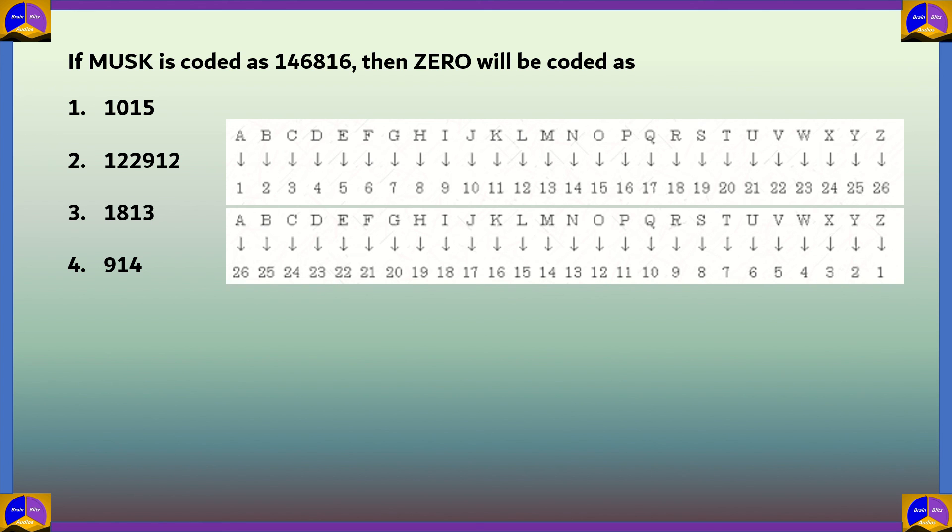If we look at the position of the alphabets in reverse, so Z will be 1 and A would be 26, we get M is 14, that is true. U is 6, that is true, S is 8 and K is 16. If we apply this,